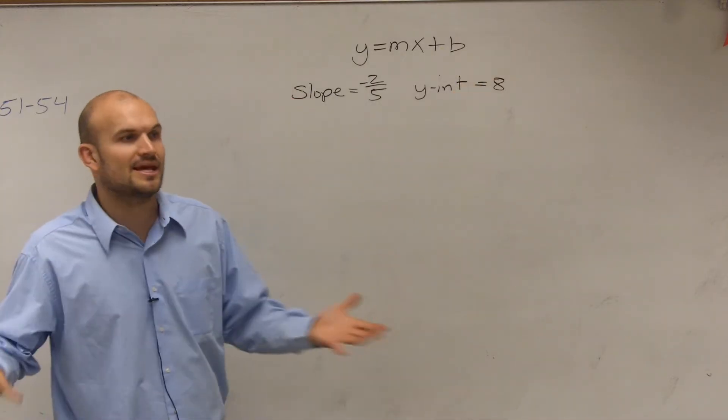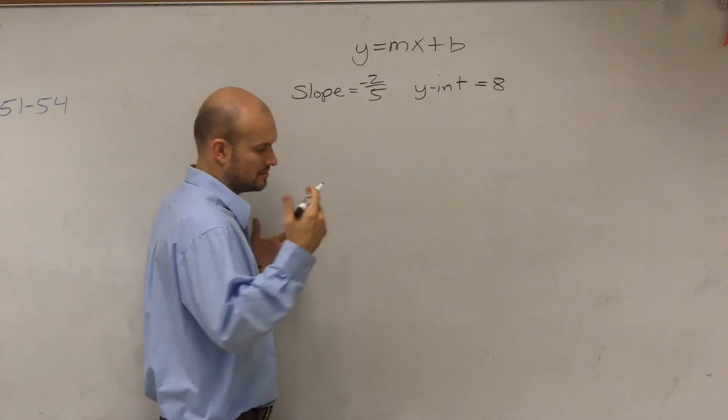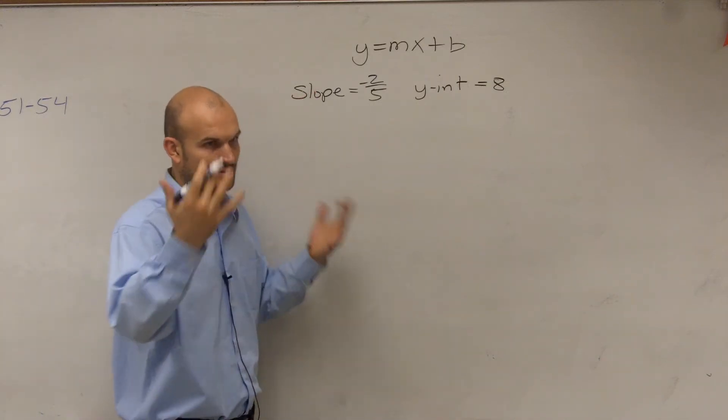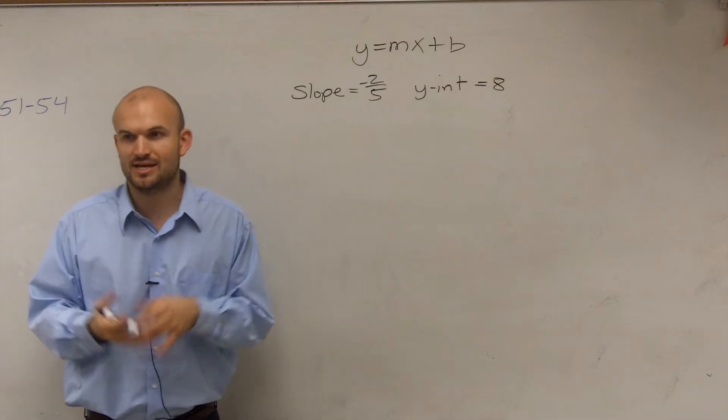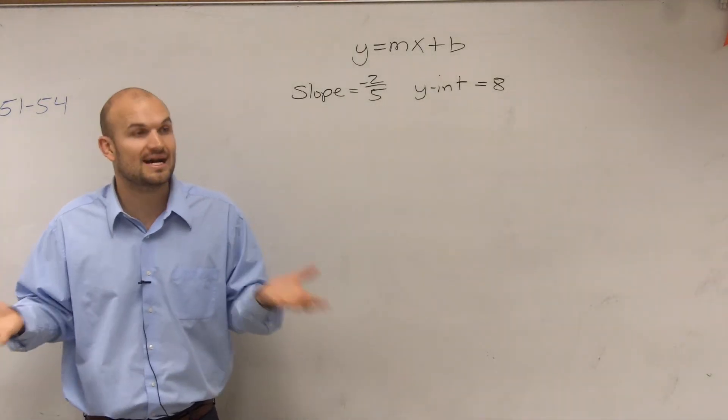And we need to remember, when it's in that form, what does everything mean? m represents our slope, b represents our y-intercept, and y and x represent all the coordinate points on your line, right?